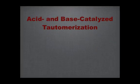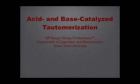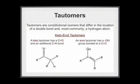This is a short introduction to acid and base-catalyzed tautomerization. Tautomers are constitutional isomers that differ in the location of a double bond and most commonly a hydrogen atom. Tautomers that differ in the location of a hydrogen atom are more specifically known as prototropic tautomers. Keto-enol tautomers are a common set of prototropic tautomers.